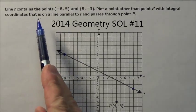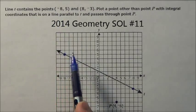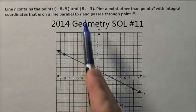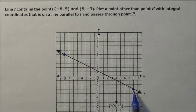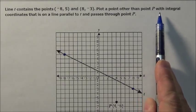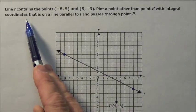Here's problem 11. It says line t contains the points, which I darkened right there, and over 8 down, plot a point other than P with integral coordinates.